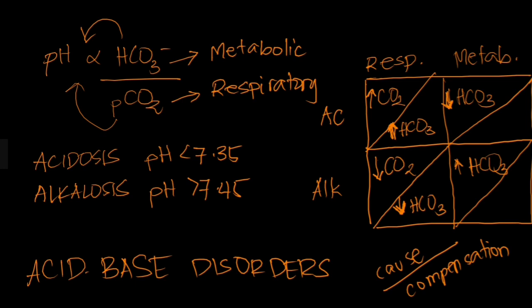Let's go to metabolic acidosis. The cause here is a shift in bicarbonate, so what compensates is CO2. Since this is acidosis, the pH is decreased. To increase the pH back to normal, we decrease the CO2 levels — remember, CO2 and pH are inversely proportional.